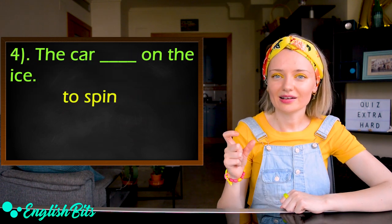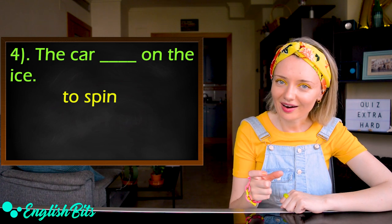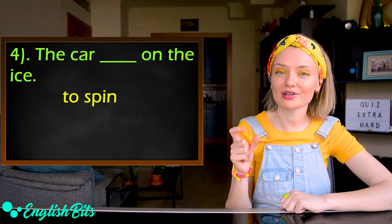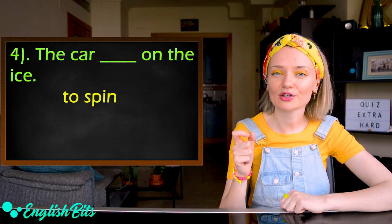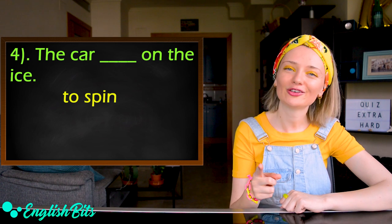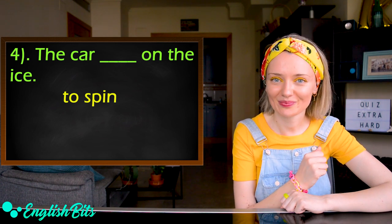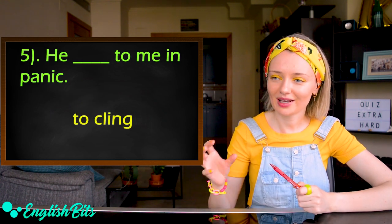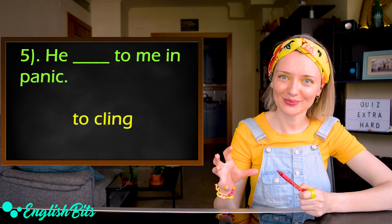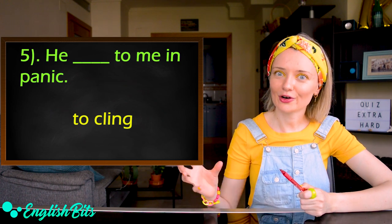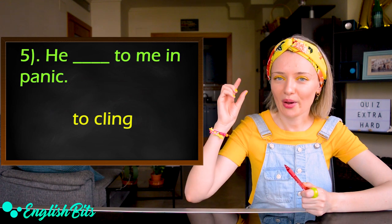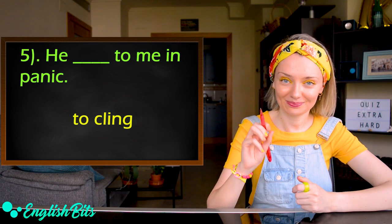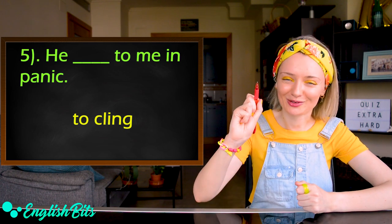Number four: The car [gap] on the ice. The verb you have to use is to spin. Think carefully and write down your answer. Number five: He [gap] to me in panic. The verb you have to put into the correct grammar form is to cling. Don't forget to write down your answer.